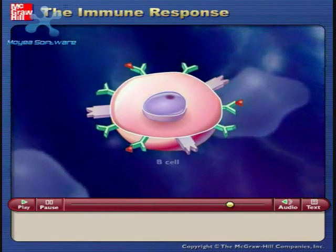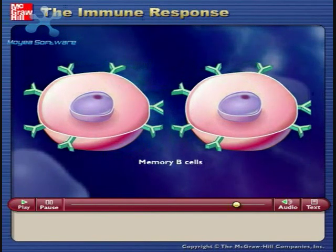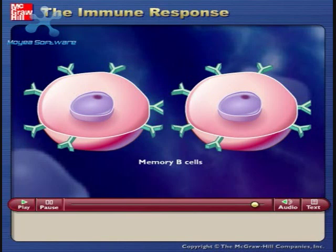Some of the B cells do not turn into antibody factories, but instead become memory B cells that may survive for several decades. Because of these memory B cells, the secondary immune response to a future infection by the same pathogen is swifter and stronger. This powerful secondary immune response is what gives immunity to some diseases after you have had them once or after you have been vaccinated.